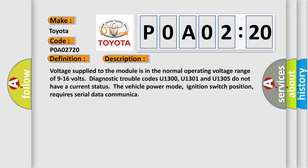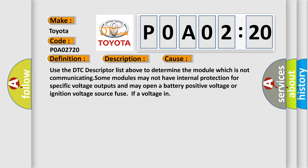This diagnostic error occurs most often in these cases. Use the DTC descriptor list above to determine the module which is not communicating. Some modules may not have internal protection for specific voltage outputs and may open a battery positive voltage or ignition voltage source fuse if voltage is incorrect.